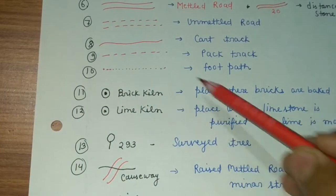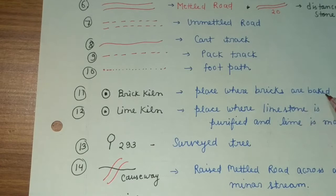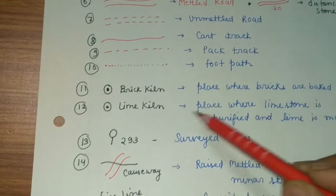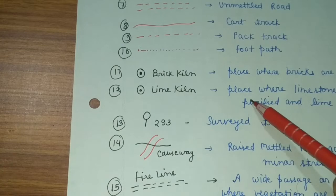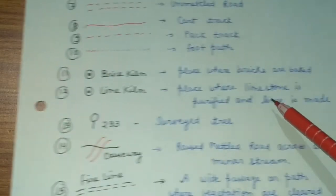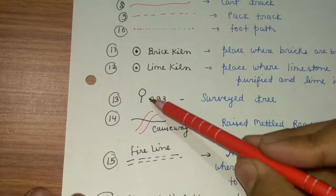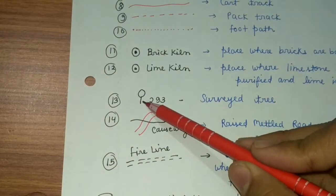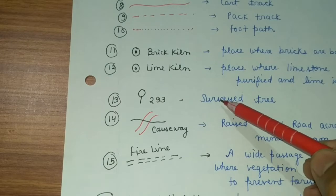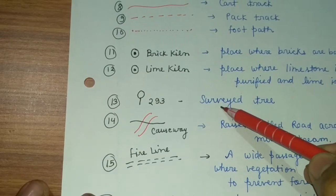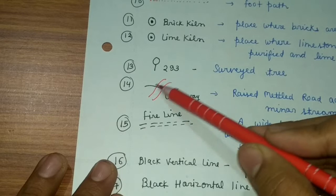The next black conventional symbol is 'brick kiln,' which represents a place where bricks are baked. 'Lime kiln' means a place where limestone is purified and lime is made. Another black symbol represents a survey tree — a specific tree that has been surveyed.